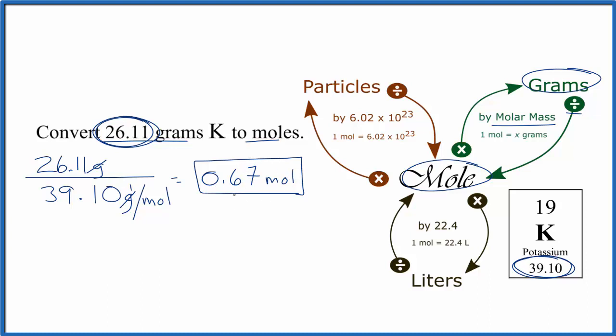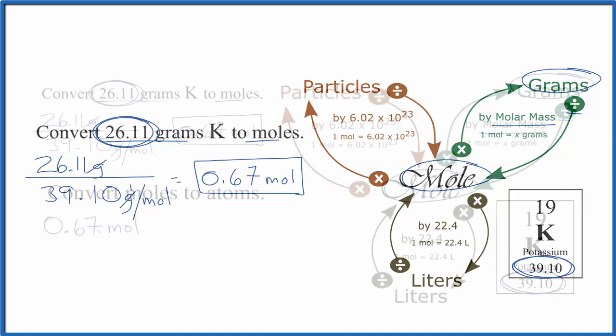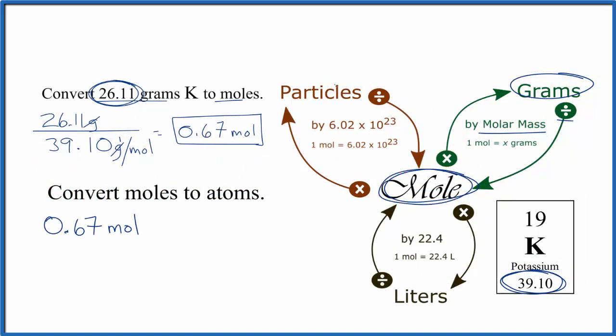So let's convert the moles of potassium to atoms of potassium. To do that we have moles and we want to go to atoms, sometimes just called particles. Particles are things like molecules, atoms, ions.